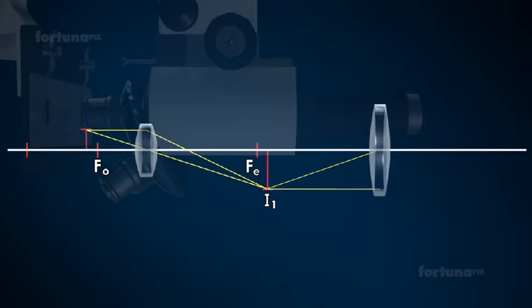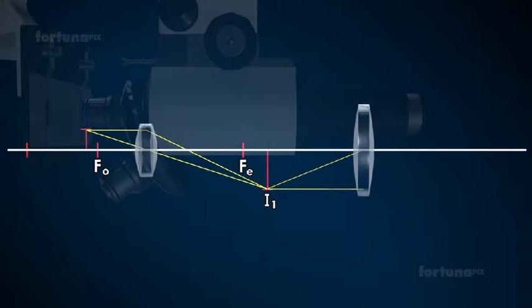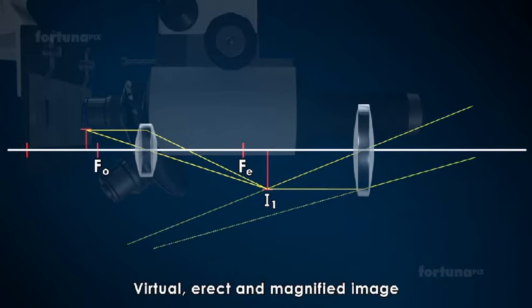The eyepiece is adjusted such that the image I1 lies within the focus of the eyepiece Fe. The eyepiece functions as a magnifying glass and forms a virtual, erect, and magnified image I2 of the object.